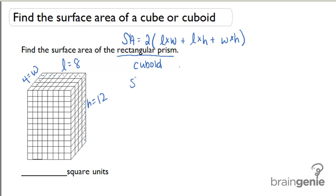So if I plug these numbers into the formula, I would have 2 times 8 times 4 plus 8 times 12 plus 4 times 12. And since order of operations tells me to deal with my parentheses first, I'm going to multiply those numbers inside the parentheses and then add those numbers up.